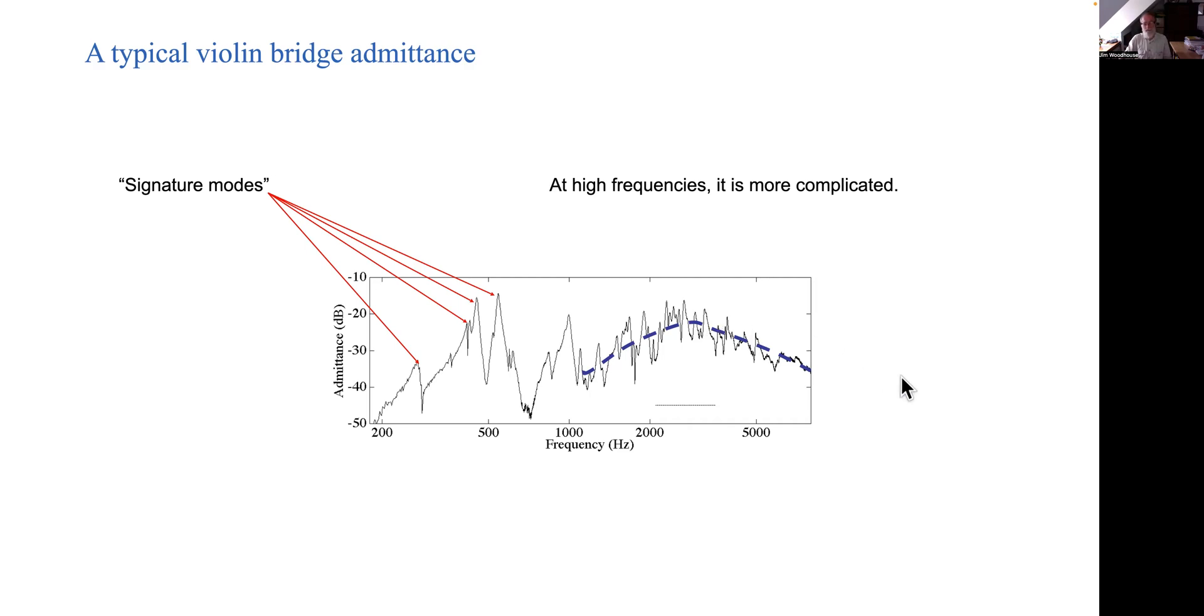But we can see something else in this picture which is highlighted by this dashed blue line that I've drawn through it. There's a lot of fuzzy little up and down peaks but underneath that there's a rather broad structure of the whole thing going through a rise and I'm going to call that a formant.